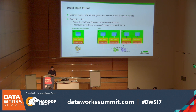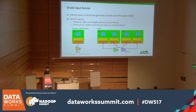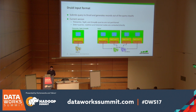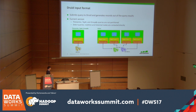The Druid input format submits the query to Druid and generates records from the query results. In the current version, time series, top-N, and group-by queries are not partitioned, so we contact directly the broker node in Druid — expecting the result size to be small. For select queries that can potentially return more results, we bypass the broker node and contact the real-time and historical nodes directly, allowing us to parallelize the execution.